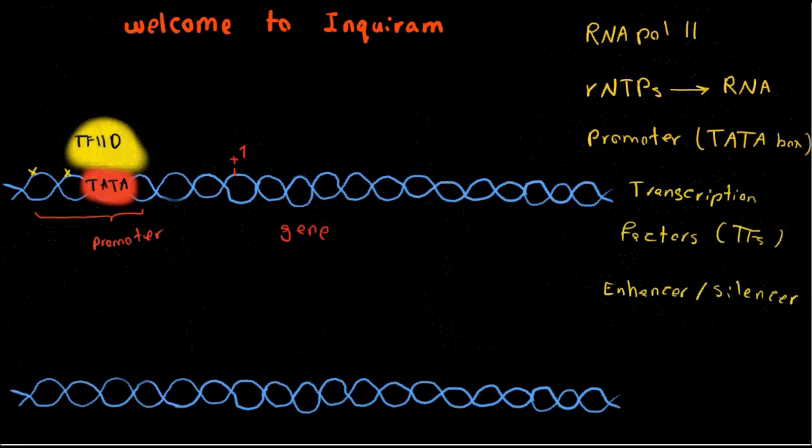TF2D is itself composed of multiple subunits, and one of those subunits is called TATA binding protein, or TBP for short form. TBP is responsible for specifically binding to TATA box. TF2D also consists of around 10 to 12 other polypeptides called TBP-associated factors, or the short form is TAF.